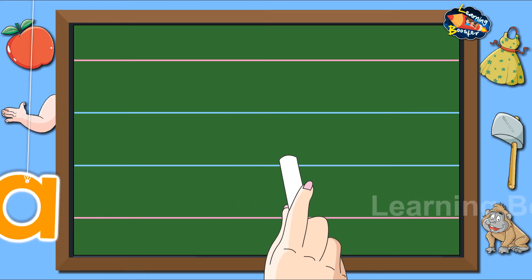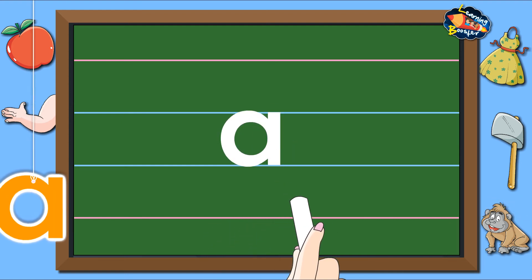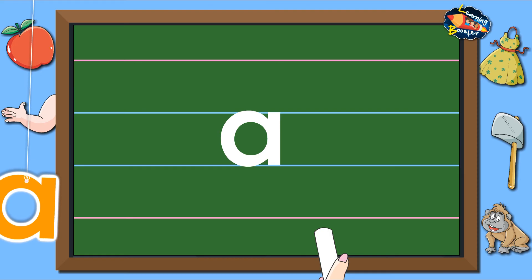Let us look at it once more. One curve and a standing line makes letter A.